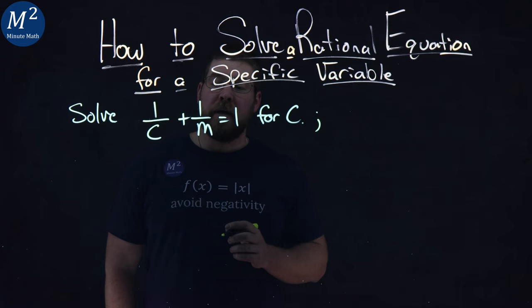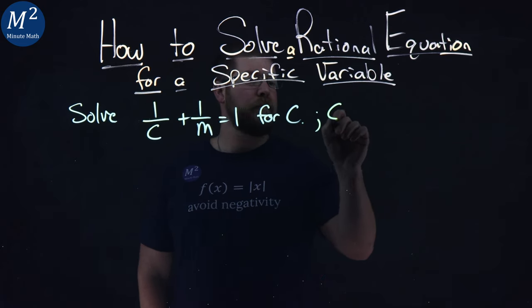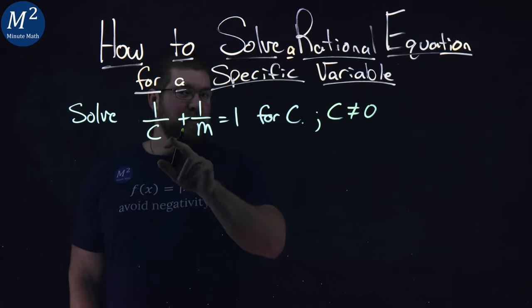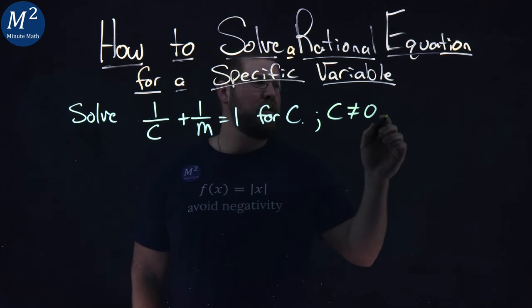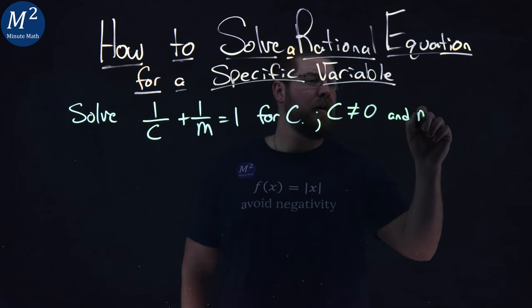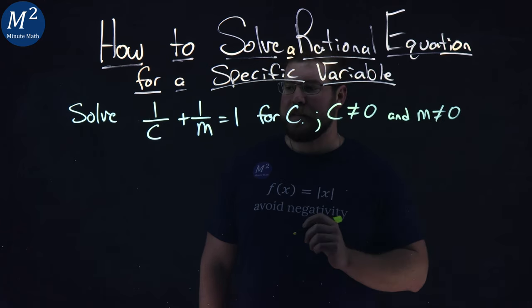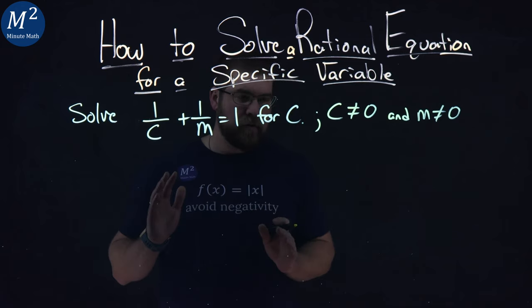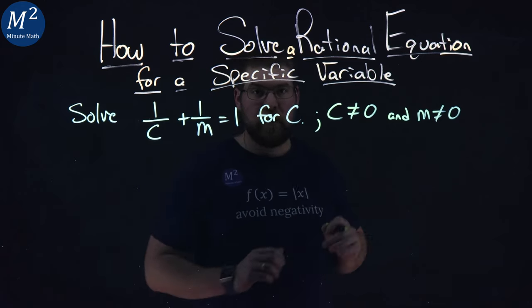There are some things I want to state from the beginning. c cannot equal 0. Notice, if we divide by 0, we can't do that. The same thing applies to m - m cannot equal 0. We can't divide by 0. So from the beginning, before we manipulate this equation, we want to make sure that is noted for ourselves.